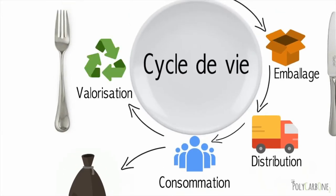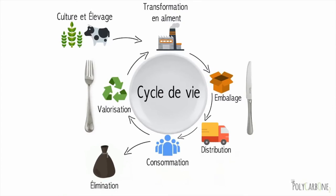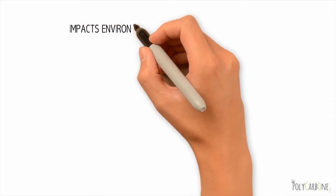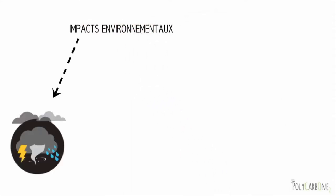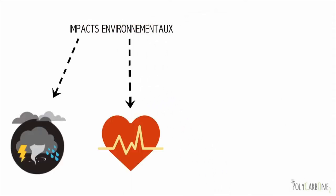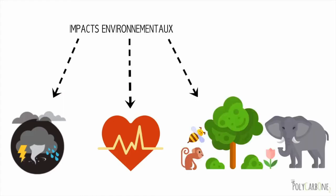Cette approche permet de déterminer les étapes du cycle de vie les plus néfastes pour l'environnement et de comparer différentes alternatives répondant à un même besoin, dans le cas présent, s'alimenter. Les impacts environnementaux étudiés peuvent être les impacts sur les changements climatiques, mais aussi l'impact sur la santé humaine ou l'impact sur la qualité des écosystèmes.